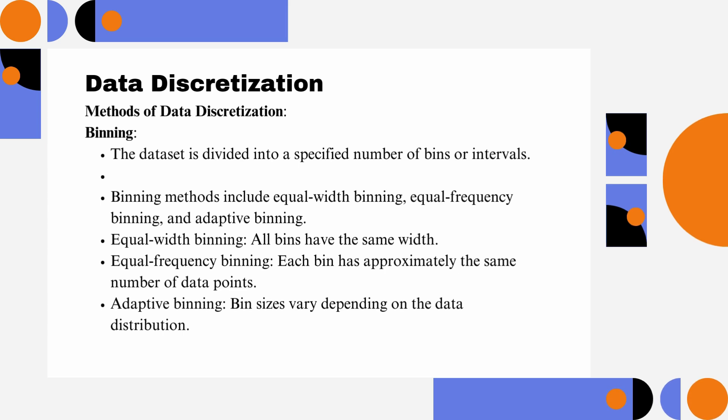Methods of Data Discretization. Binning: The dataset is divided into a specified number of bins or intervals. Binning methods include equal-width binning, equal-frequency binning, and adaptive binning. Equal-width binning: all bins have the same width. Equal-frequency binning: each bin has approximately the same number of data points. Adaptive binning: bin sizes vary depending on the data distribution.